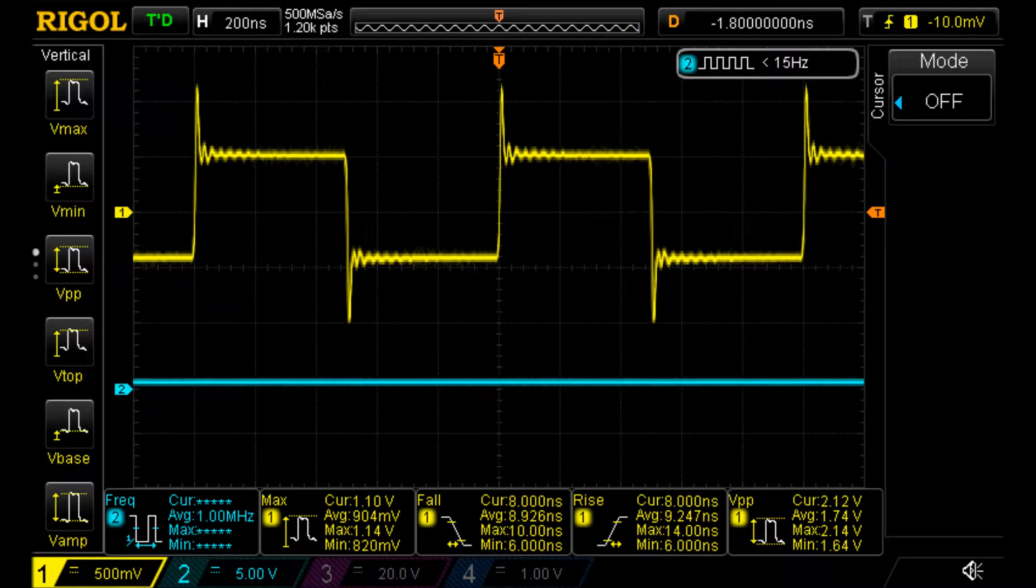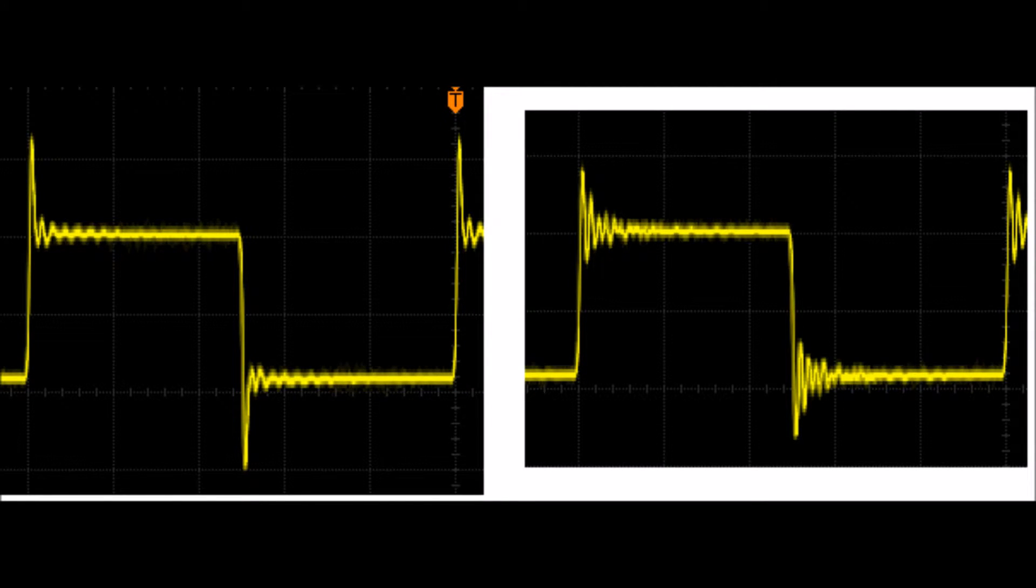Here is the original signal. We've disconnected the cable to the scope, but left the T and everything else in place. Here are the two side by side. The left is without the cable and the right is with the cable.